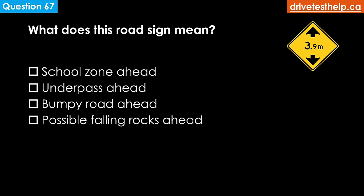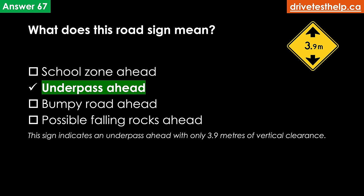What does this road sign mean? Options: school zone ahead; underpass ahead; bumpy road ahead; possible falling rocks ahead. The correct answer is underpass ahead. This sign indicates an underpass ahead with only 3.9 meters of vertical clearance. In Ontario, trucks can legally be up to 4.15 meters tall.